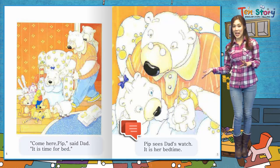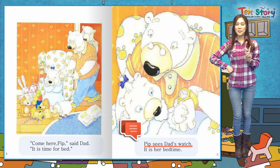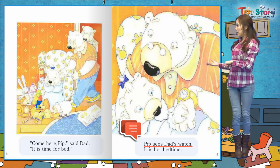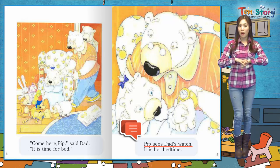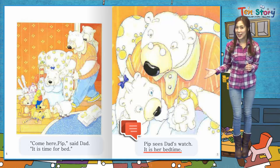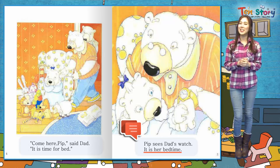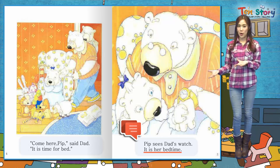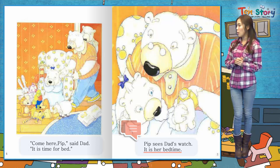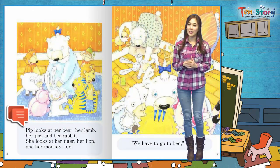PIP sees dad's watch. PIP은 아빠의 시계를 보았어요. 아빠의 시계를 보네요. 지금 몇 시일까요? 이렇게 보는 것 같아요. 체크하는 것 같아요. It is her bedtime. 체크해 봤더니 정말로 잠을 잘 시간이네요. 그녀의 잘 시간이에요. 이런 뜻이에요. 서서히 잘 준비를 하는 것 같은데요.